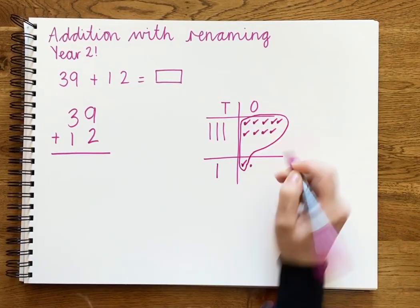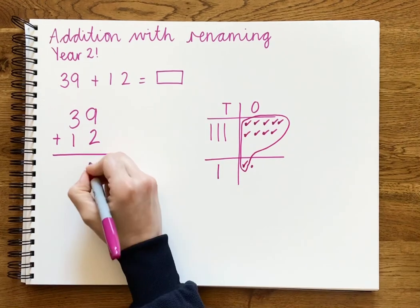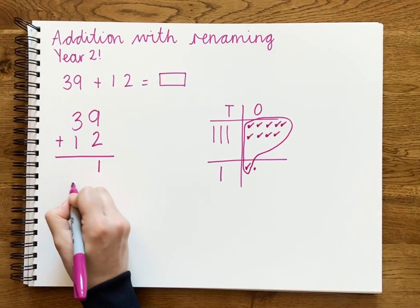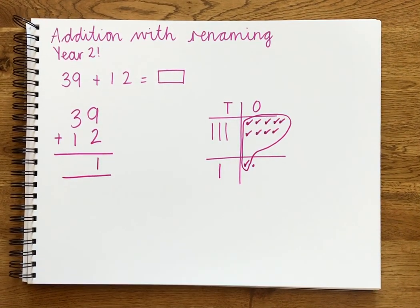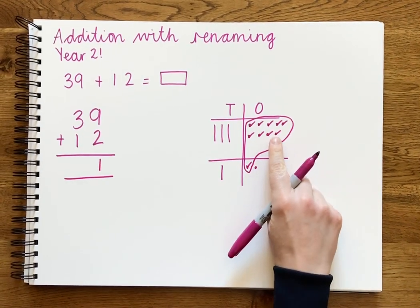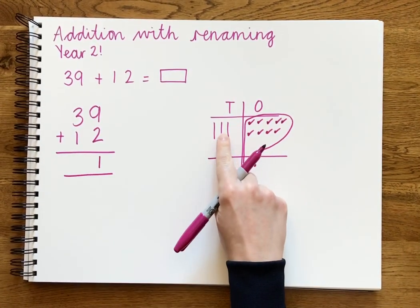We have got one left, so we put it over in our ones column. And then we count our tens, so count this one first so you don't forget about it: 10, 20, 30, 40, 50.